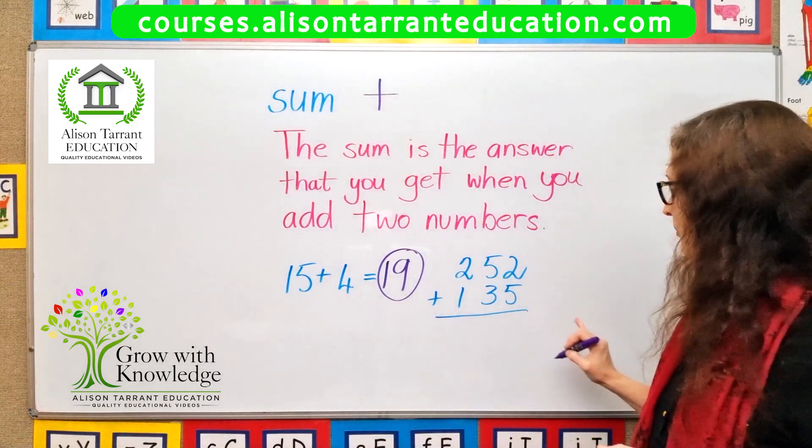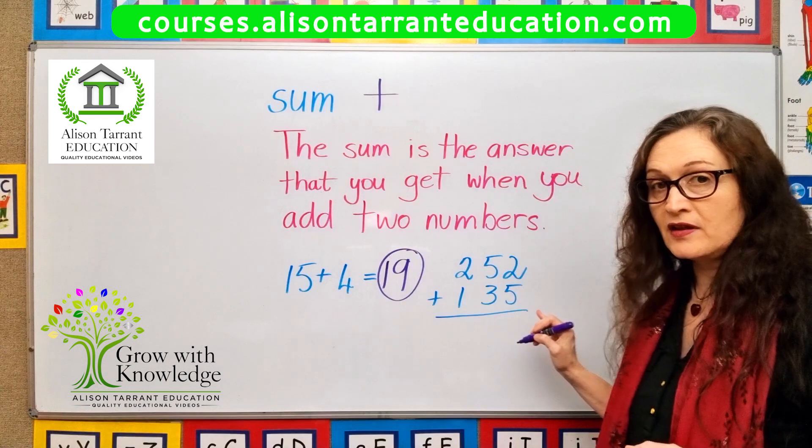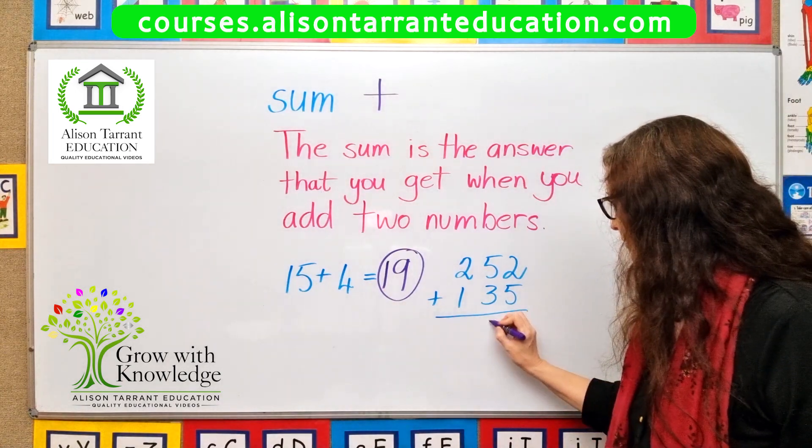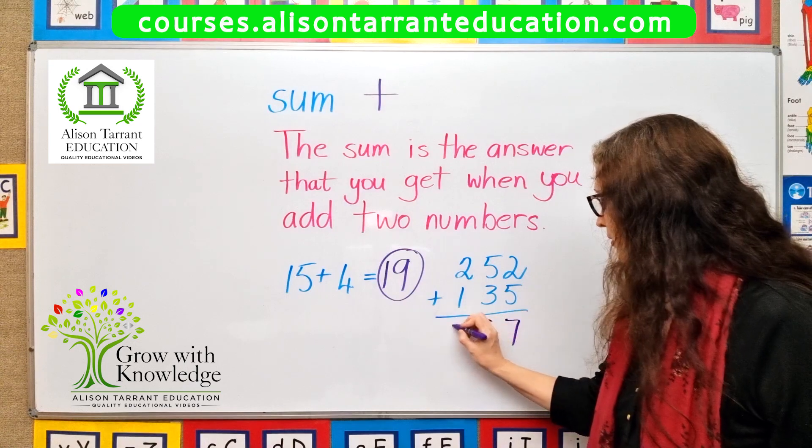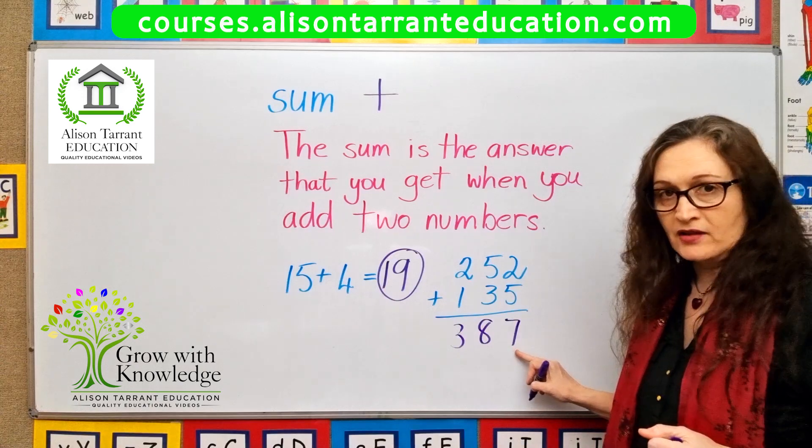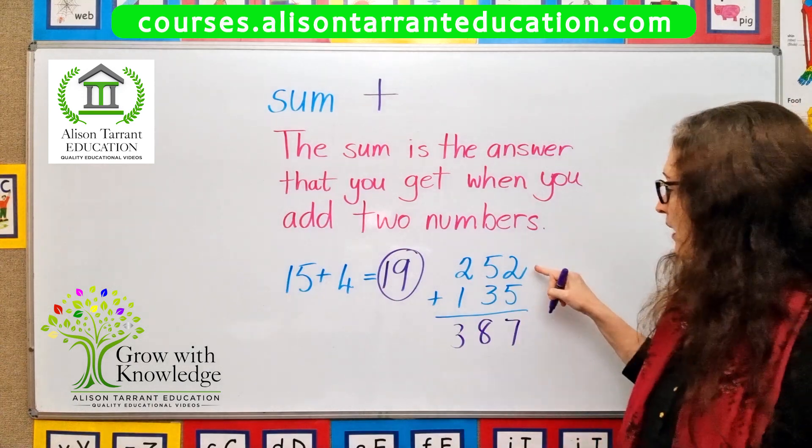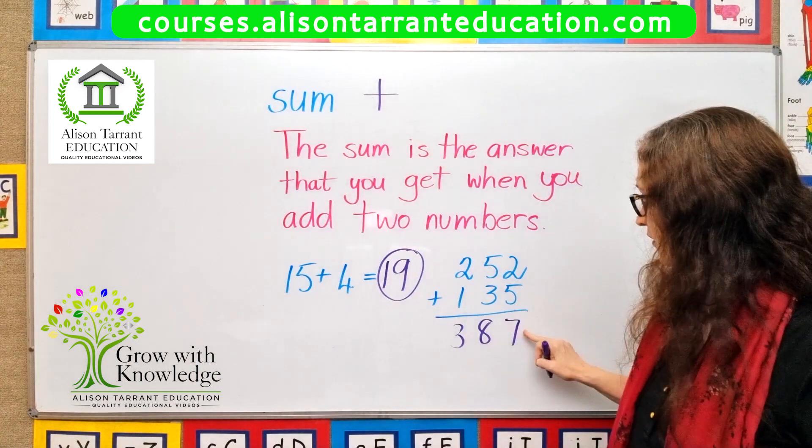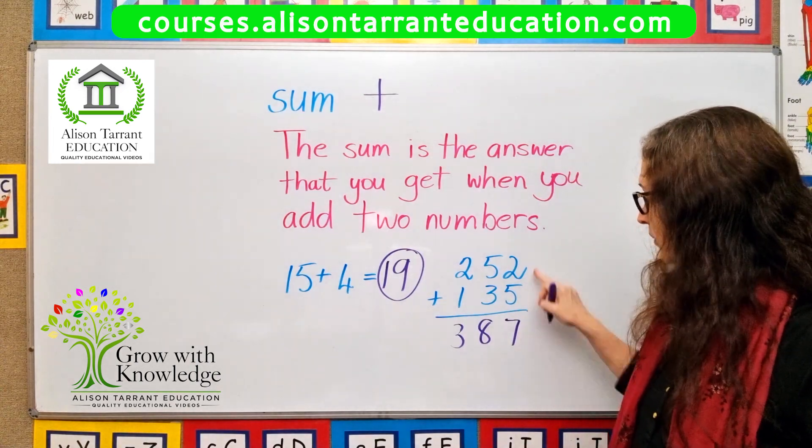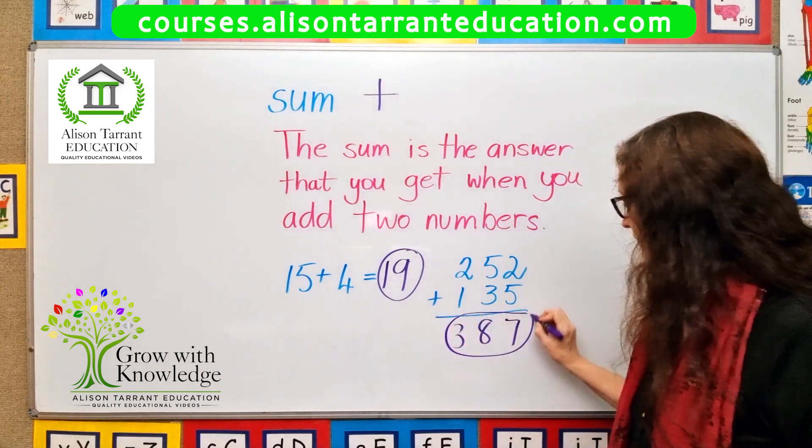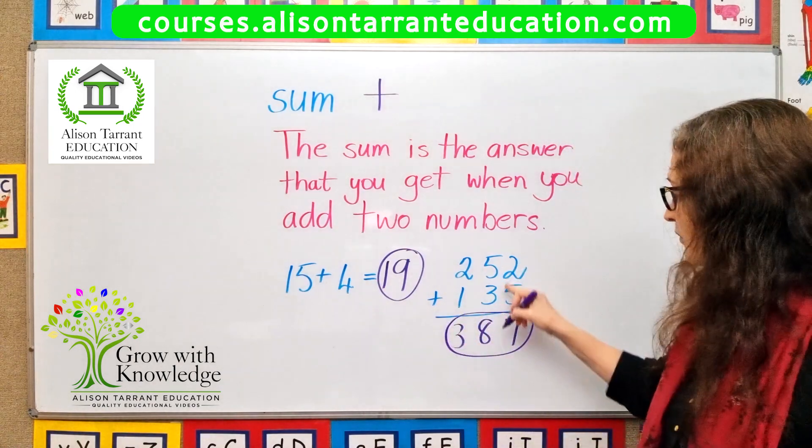Now if you take a look at this number here, I'll just add these numbers up and get the sum. So this would be 7, 8 and 3. So 387 is the answer that you get when you add 252 plus 135. This is the sum that you get when you add these two numbers. So 387 is the sum of these two numbers.